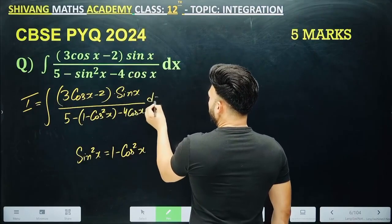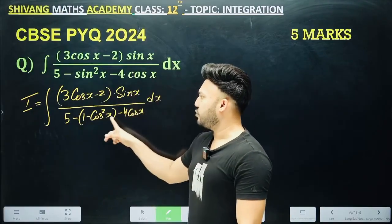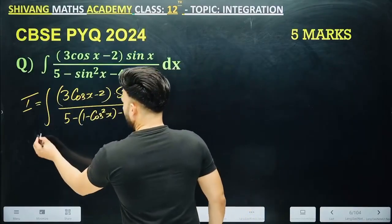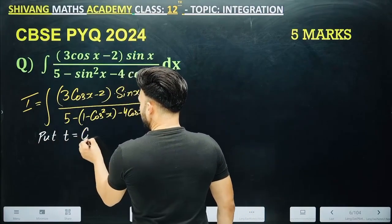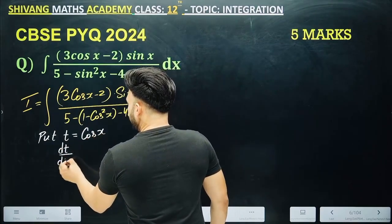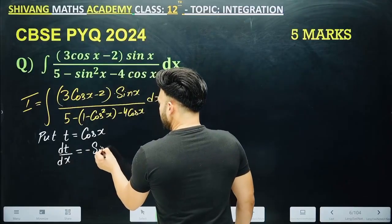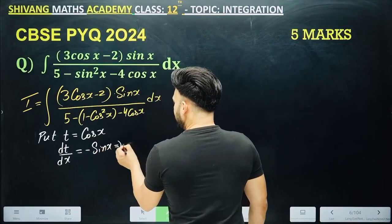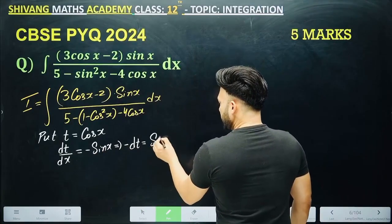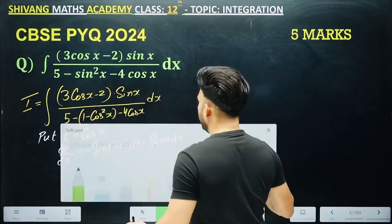Now, take cos x as t. Everywhere there is cos x; only here there is sin x. So take cos x = t. Differentiating: dt/dx = minus sin x, so dt = minus sin x dx, which means sin x dx = minus dt.